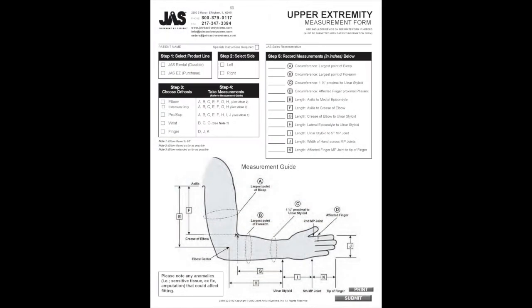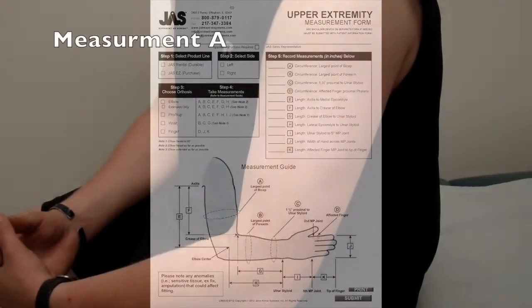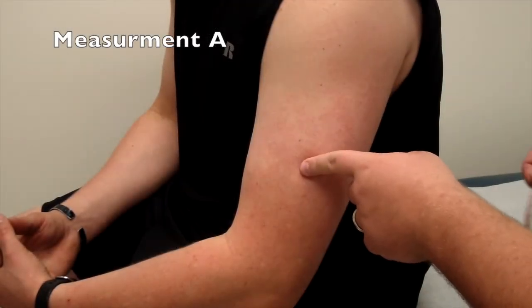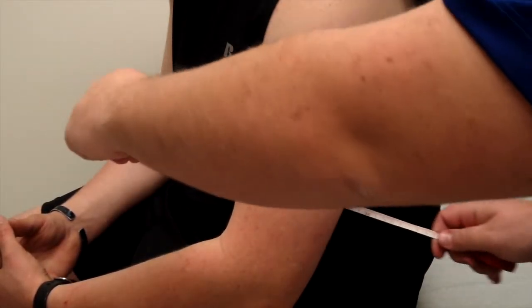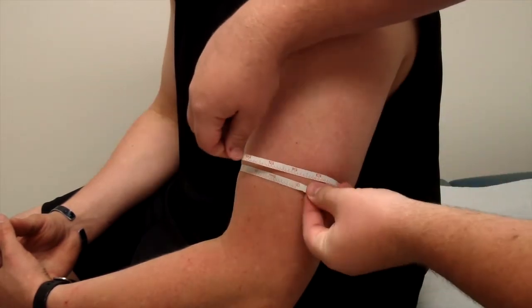We will now begin measuring for the JAZZ elbow orthosis. Measurement A. Locate the largest point of the bicep and take a circumferential measurement at this point.